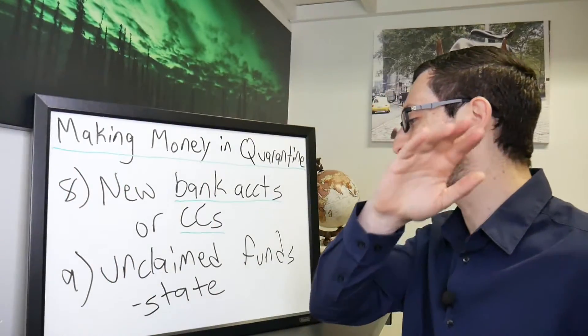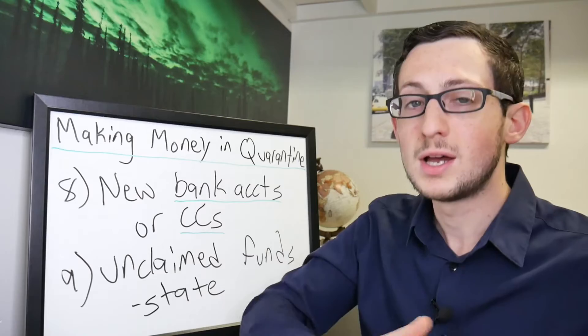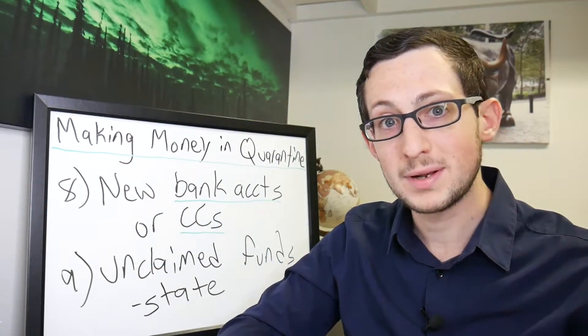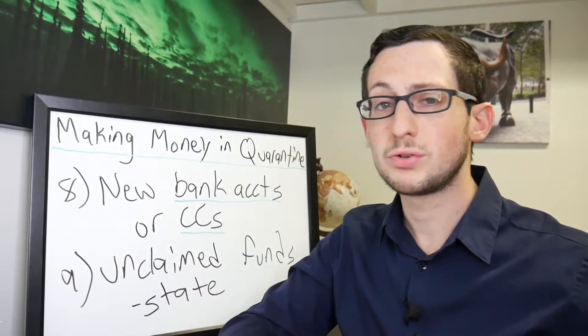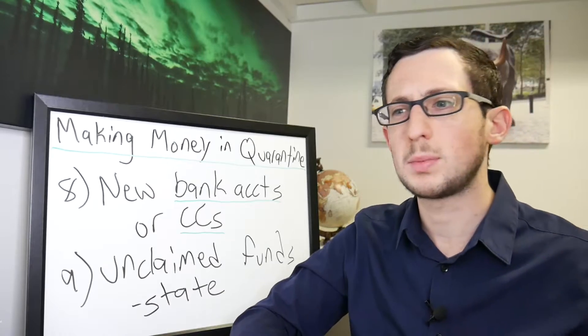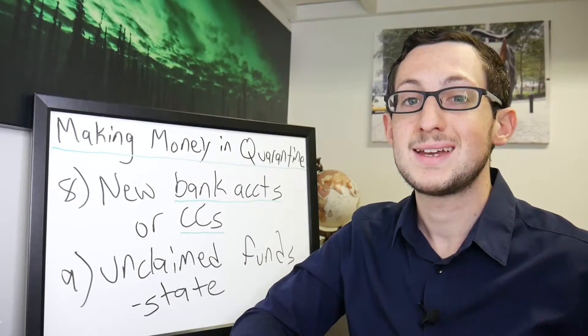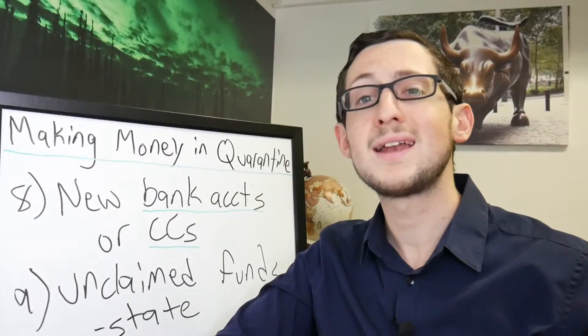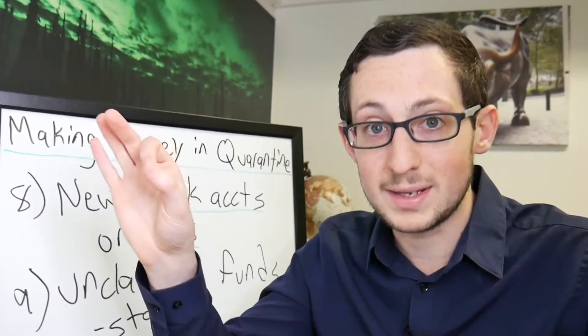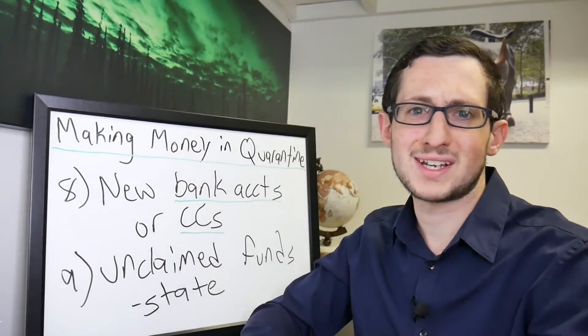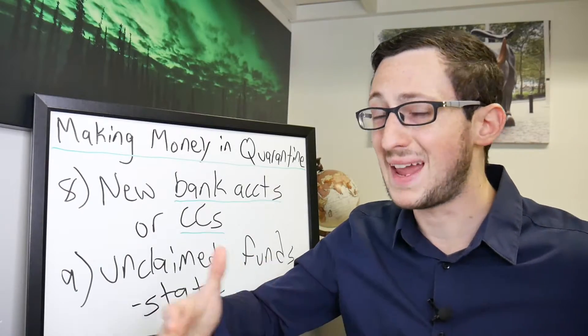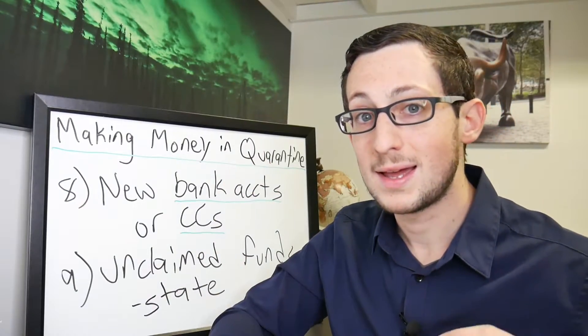Number nine is a little bit of a reach, but this doesn't require much work and some people might have some money there. So number nine is unclaimed funds. Sometimes you have just funds somewhere that you forgot about and they're still owed to you. So you're actually able to look up this on your state website. You're able to put in your information to see if anything is owed back to you. Again, it's a little bit of a reach. Some people might not owe you a dime, but it's always good to check. Takes like a couple minutes, and especially right now in this crisis, we would rather scrounge up anything we possibly can right now.